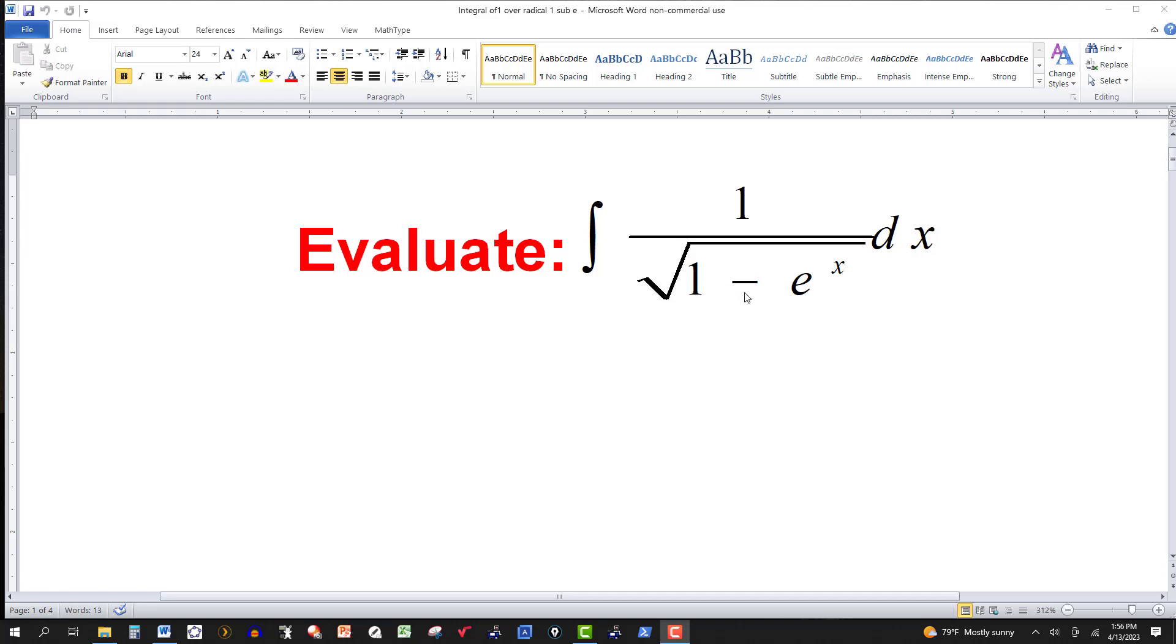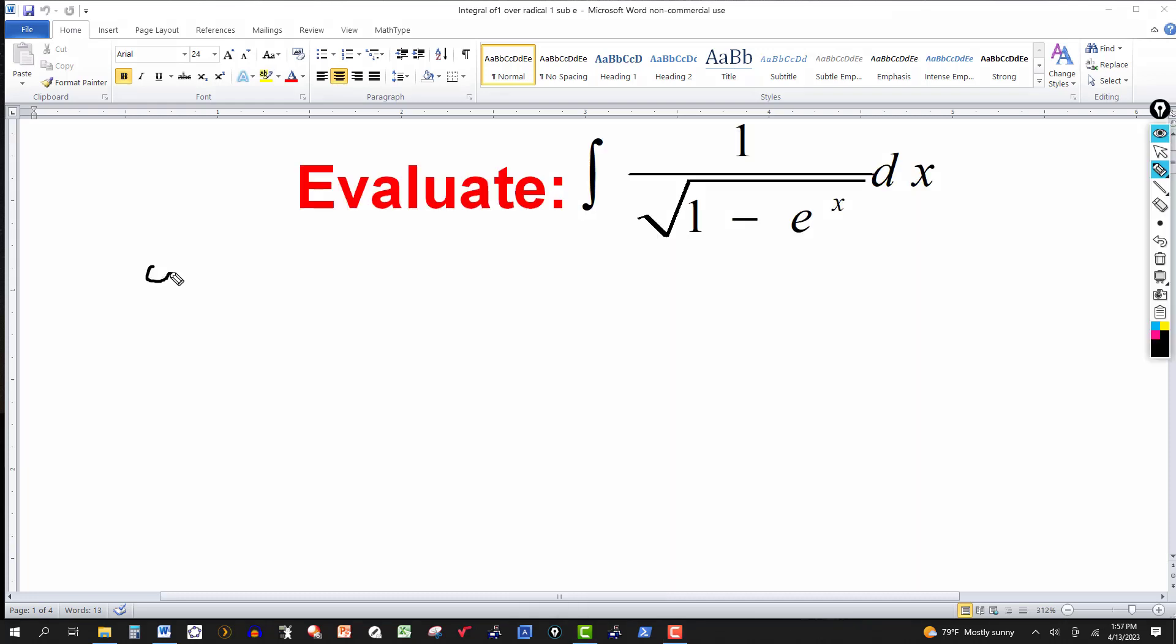Let u equal to 1 minus e to the x. That might work. Don't have too many terms to pick here, or we could let u equal to the denominator, the square root of 1 minus e to the x. And again, there might be more than one approach to this. So I'm going to let u equal to basically the denominator, u equal to square root of 1 minus e to the x.